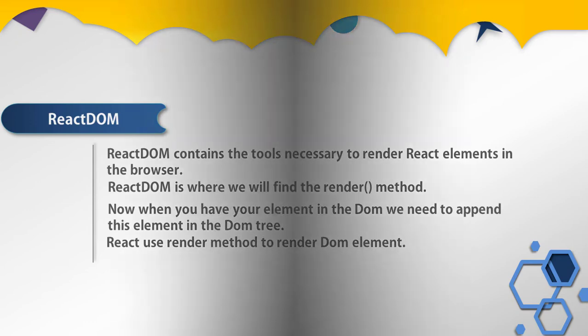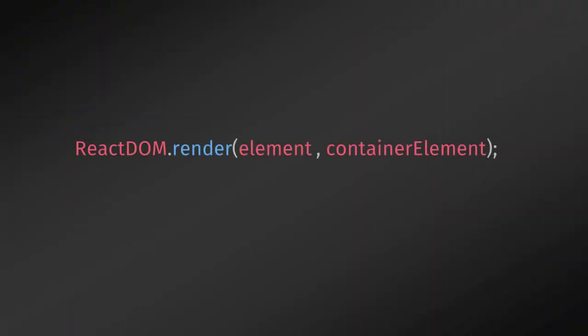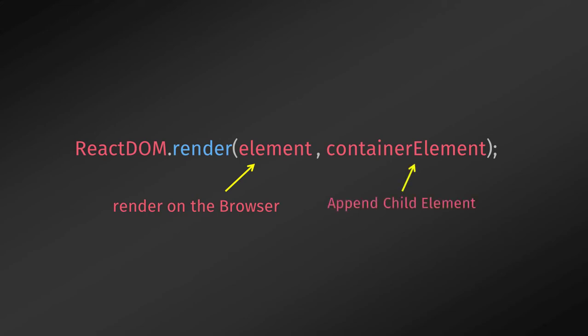Let's see how this render method looks. In the first argument of the render method, we specify the element we want to render in the browser. The second argument is the container element — the parent node — where you want to append your child element.